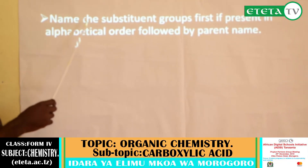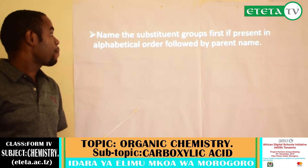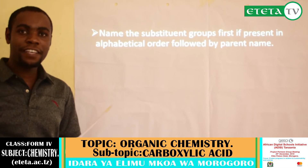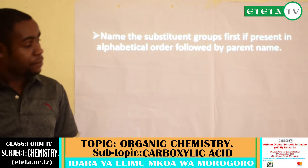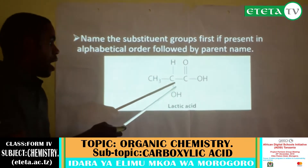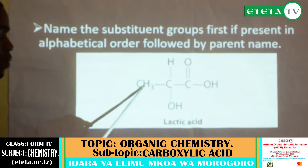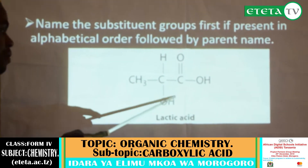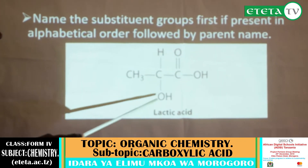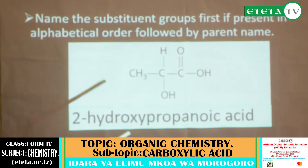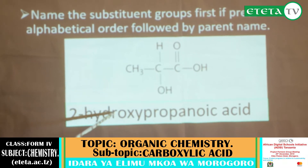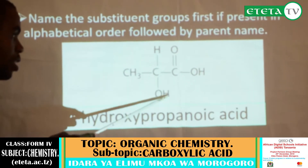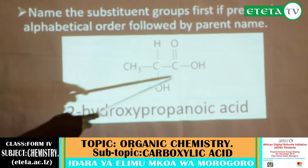Another rule says: name the substituent groups first, if present, in alphabetical order, followed by the parent name. For example, a compound with 3 carbon atoms is propanoic acid, but if there is a hydroxyl group at the second carbon, it will be named 2-hydroxypropanoic acid. We start with the substituent group, then write the parent name.